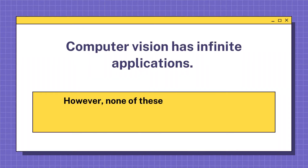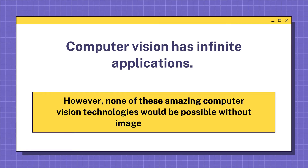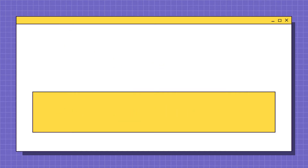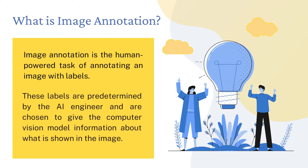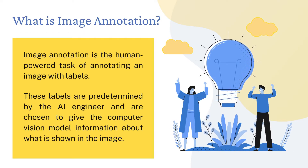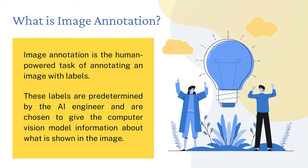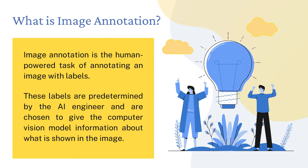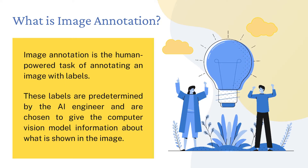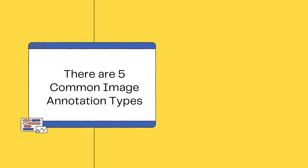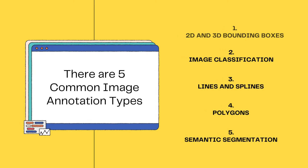Computer vision has infinite applications. However, none of these amazing computer vision technologies would be possible without image annotation. So, what is image annotation? An image annotation is the human-powered task of annotating an image with labels. These labels are predetermined by the AI engineer and are chosen to give the computer vision model information about what is shown in the image. There are five common image annotation types.